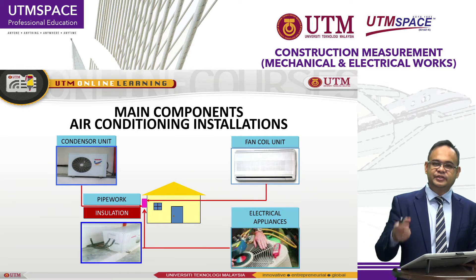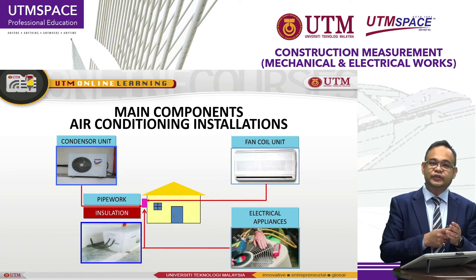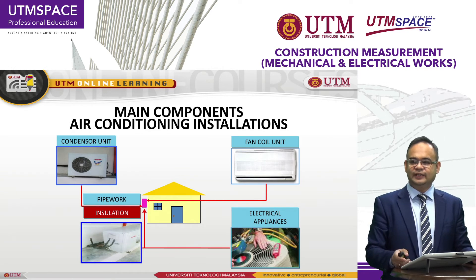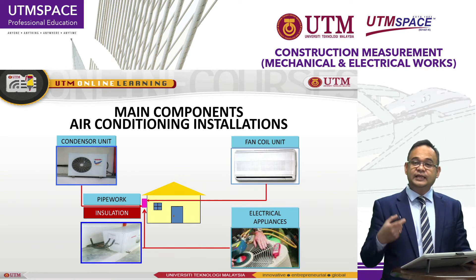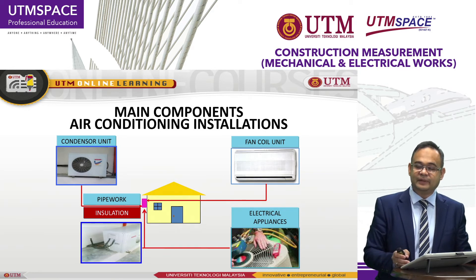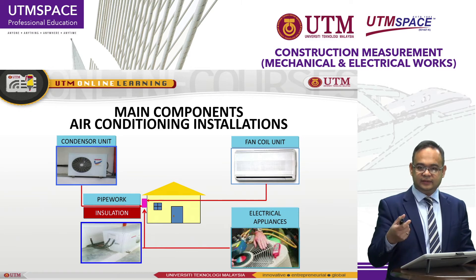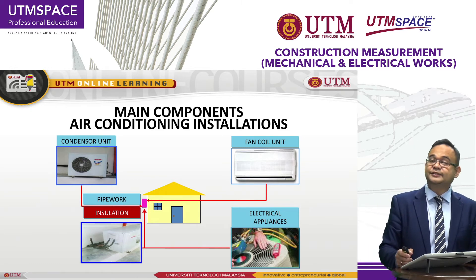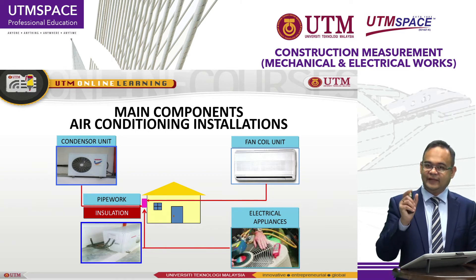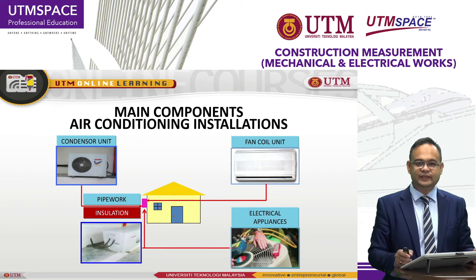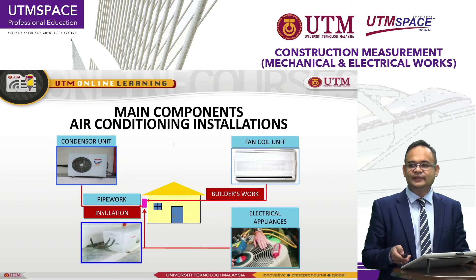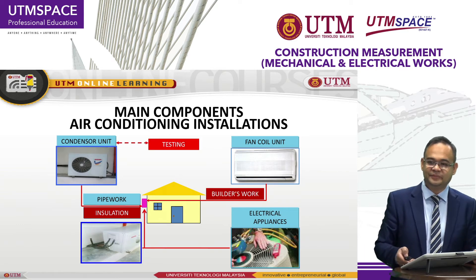This basic infographic shows the components for measuring air conditioning installation. First, you need the equipment — for example, a condenser unit and a fan coil unit. These are connected using pipework, and all supply pipes need insulation. Then there is the electrical system, builders' work and connections, and finally testing and commissioning — about seven main items for air conditioning installation.